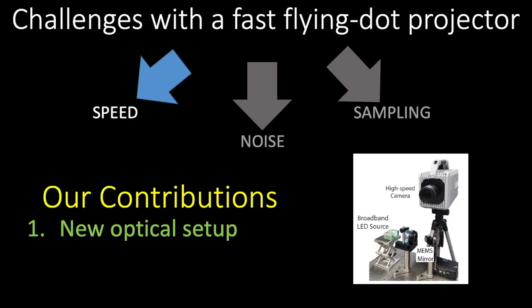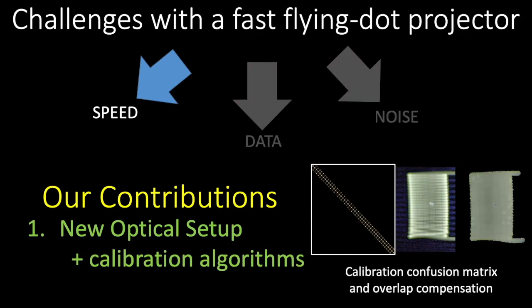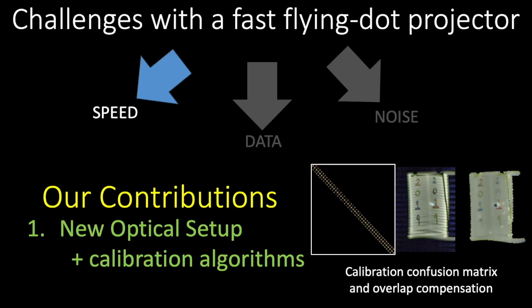Our first contribution is the unique combination of a high-speed camera and MEMS mirror to recover the flying dot. This also required a host of calibration algorithms detailed in the paper, such as overlap compensation using a confusion matrix, allowing the removal of radiometric effects.